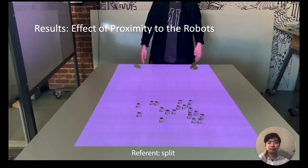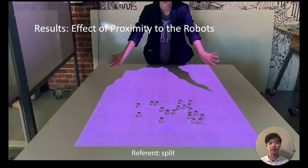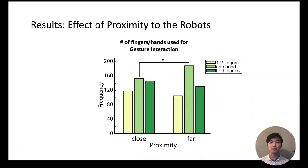Looking at the effects of proximity, indeed there was a significant effect of proximity. In particular we saw that proximity affected how many hands or fingers people use for gesture. When robots were far away, people tended to use more one-handed gesture. While we didn't investigate the exact reason behind this, we suspect it had to do with the fact that people tended to lean forward when the robots are further away and it would have been unstable to use both hands while leaning forward. But further investigation will be needed to confirm this.